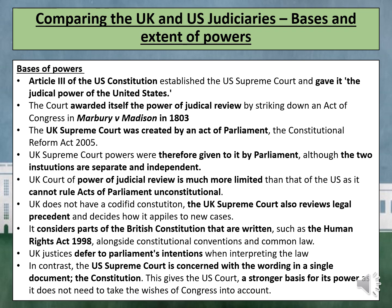The UK Supreme Court considers parts of the British Constitution that are written, such as the Human Rights Act of 1998, alongside constitutional conventions and common law. UK justices defer to Parliament's intentions when interpreting the law. In contrast, the US Supreme Court is concerned with the wording in a single document — the Constitution. This gives the US Court a stronger basis for its power, as it does not need to take the wishes of Congress into account.